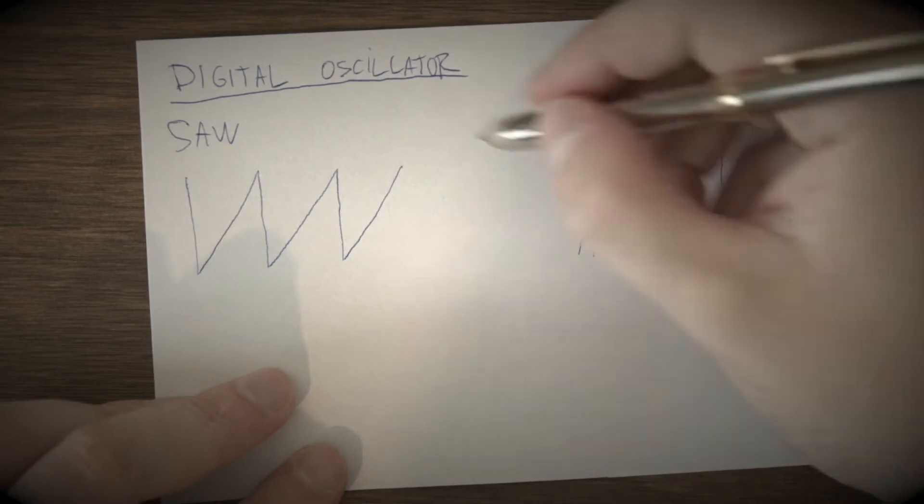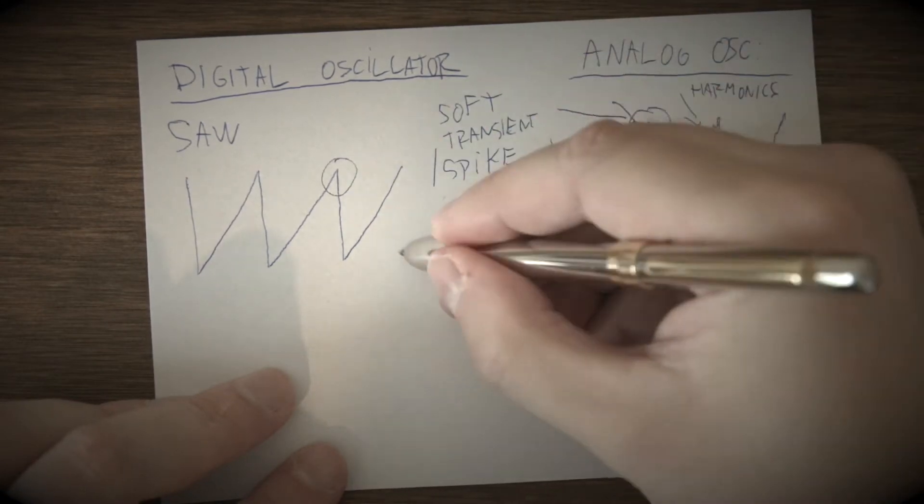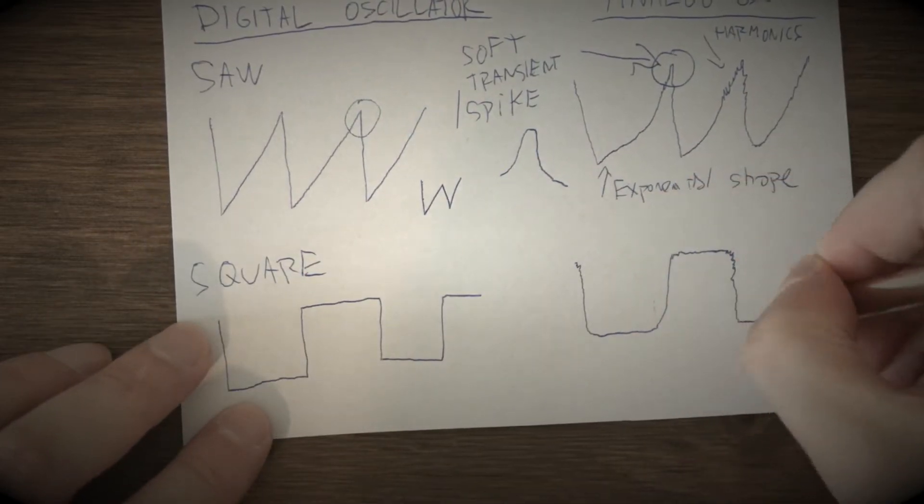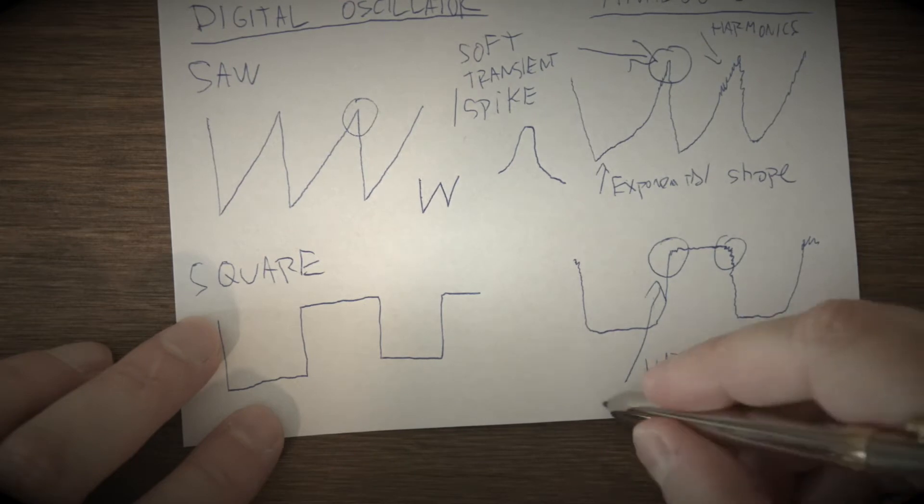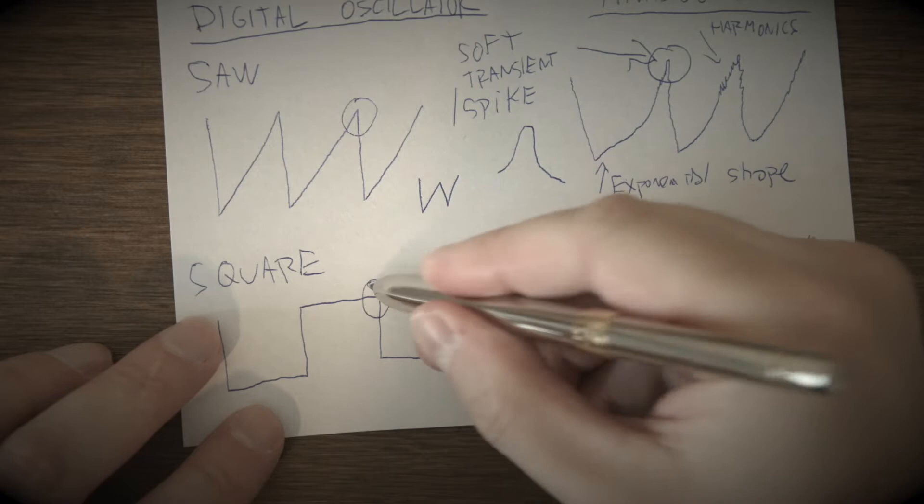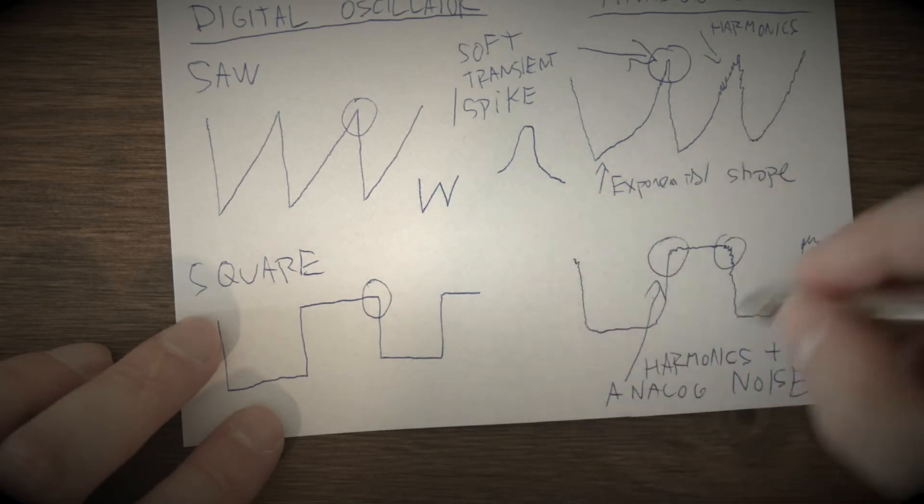Digital oscillators are sharp, linear, precise, numb, and always the same. While analog oscillators have exponential shape, round spike, harmonics, changing tone little bit, and include small amount of analog noise caused by circuit's temperature.